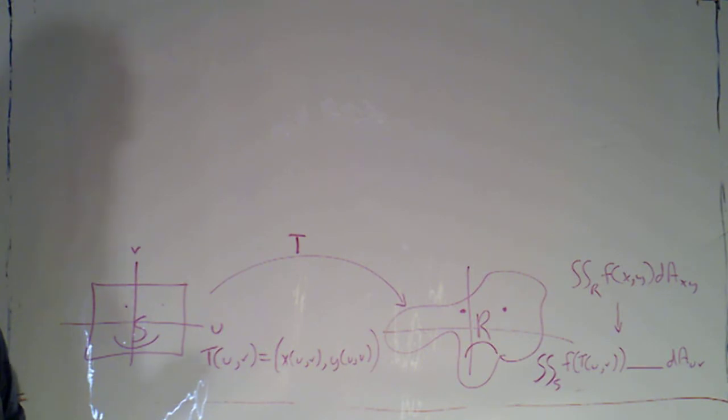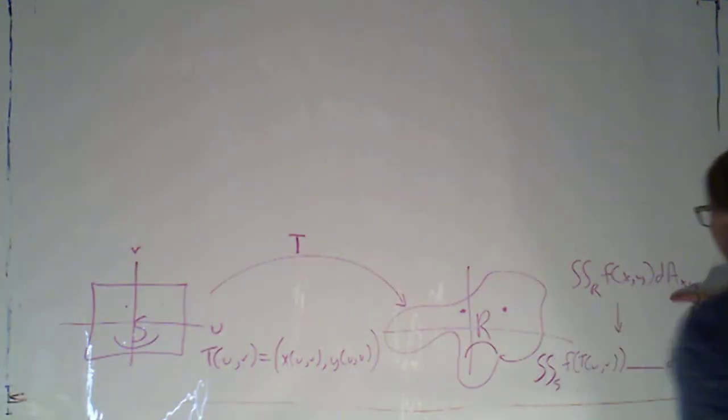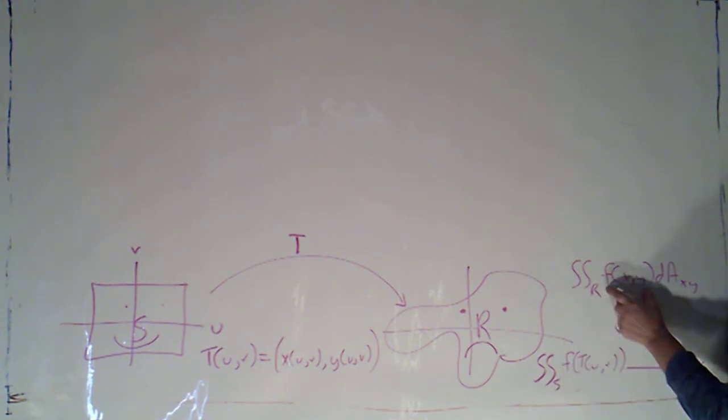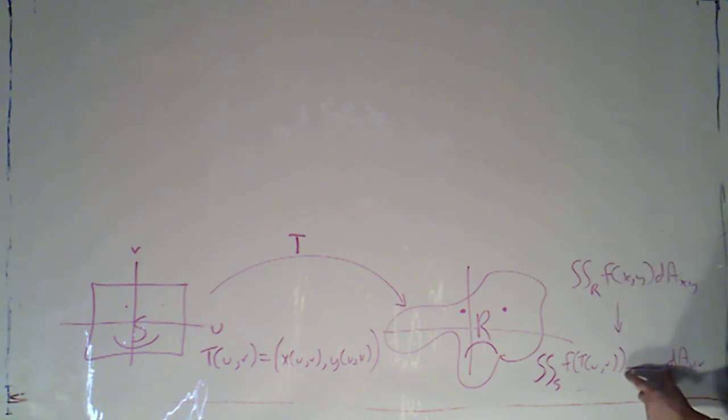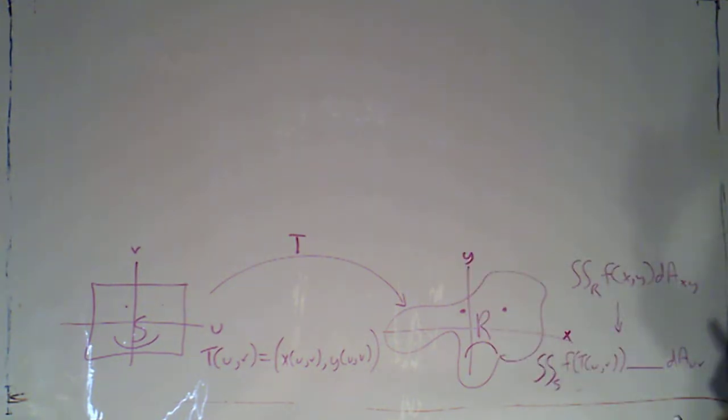And if we can find such a transformation and a region, we're hoping that we can then do a double integral over S. F of T of UV is going to give me the same Z values as F of XY, but I would expect there to be some scaling factor when I switch from integrating with respect to area in the XY plane to integrating with respect to area in the UV plane.